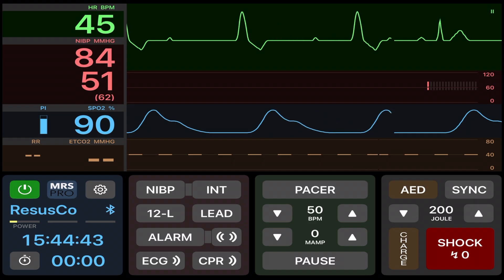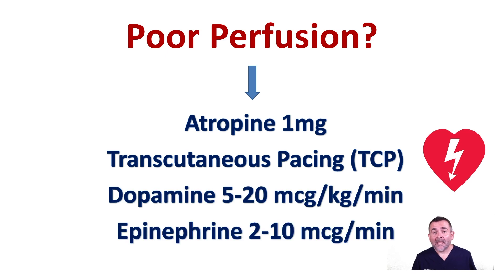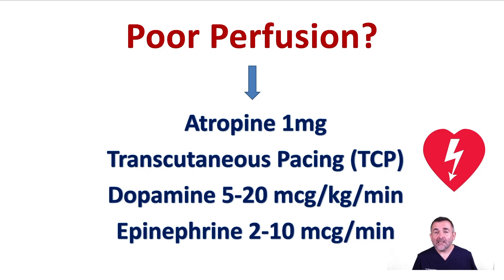If atropine is ineffective, consider transcutaneous pacing, dopamine, or an epinephrine infusion. The American Heart Association lets you choose which one you would like to use. In general, it's much quicker to start with TCP and then, as you are busy with pacing, start preparing other infusions.